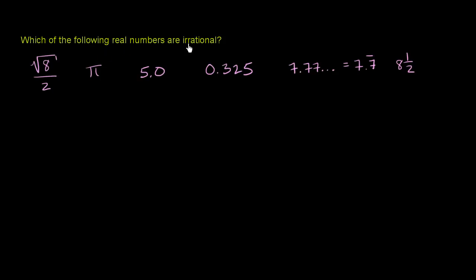Which of the following real numbers are irrational? Well, irrational just means it's not rational. It means that you cannot express it as the ratio of two integers.